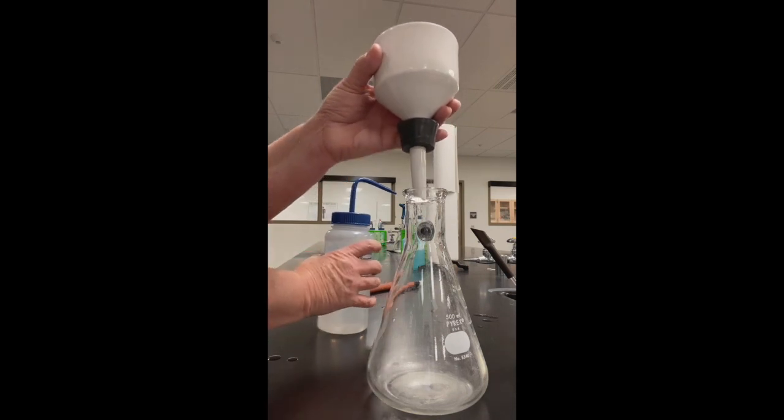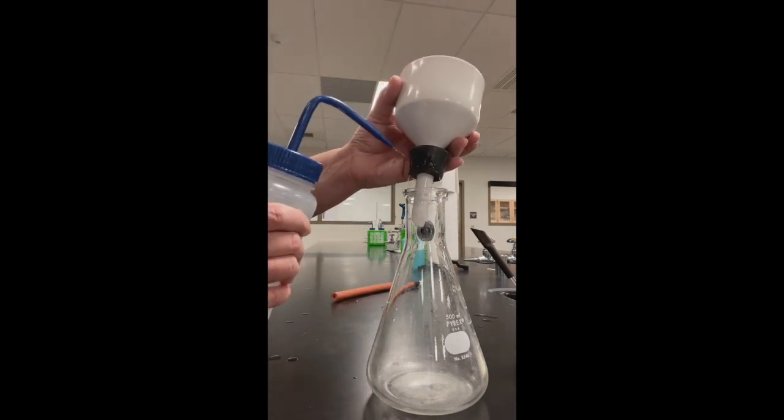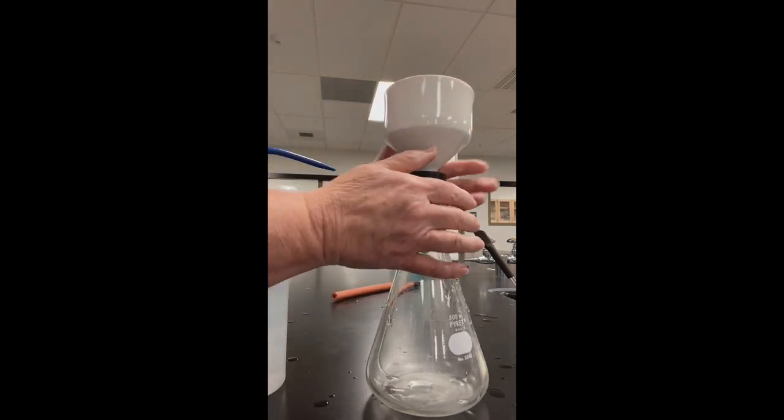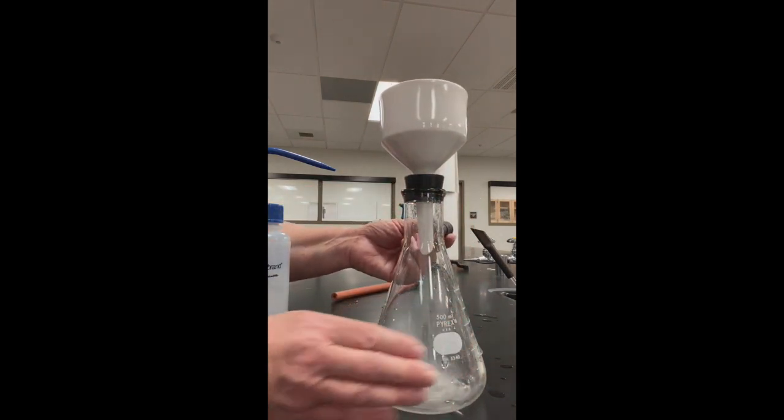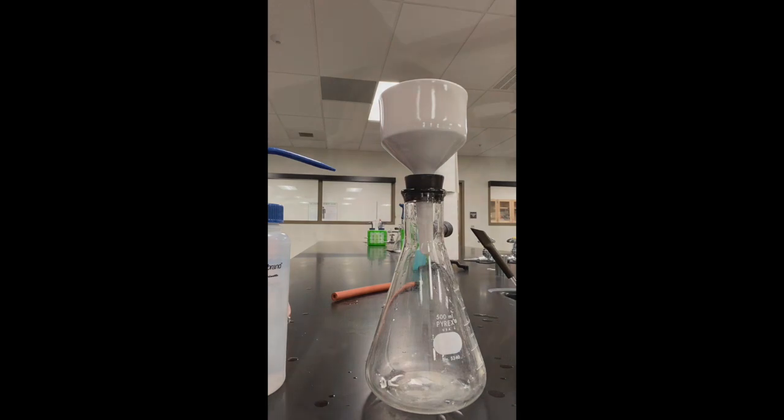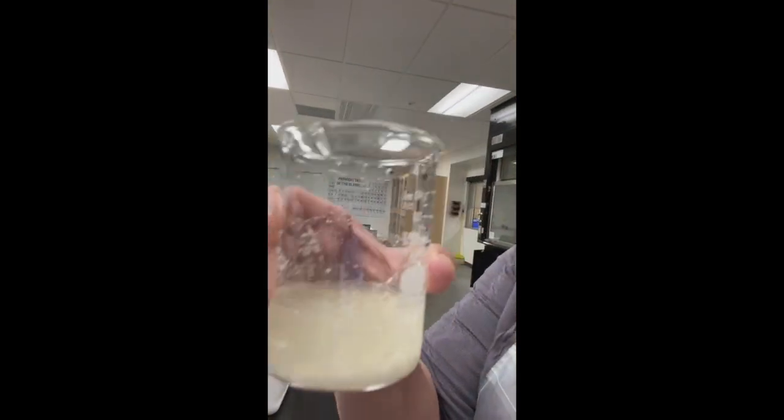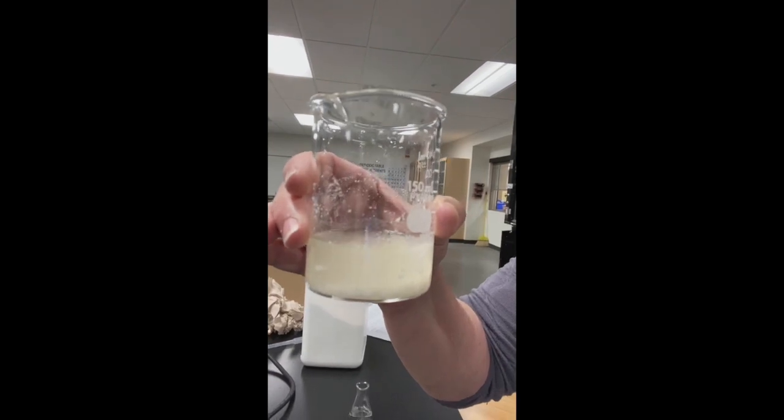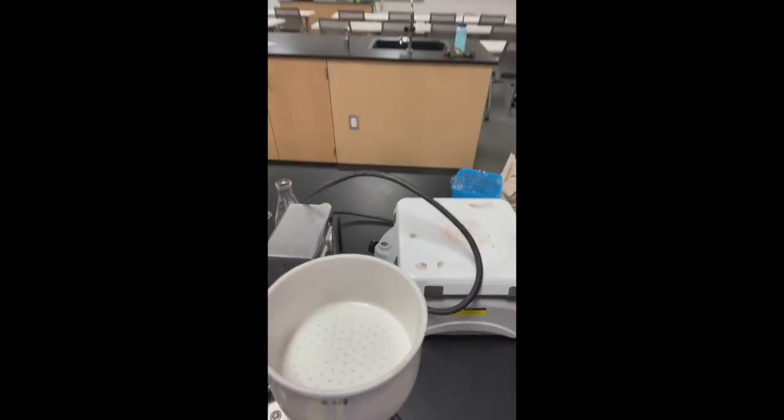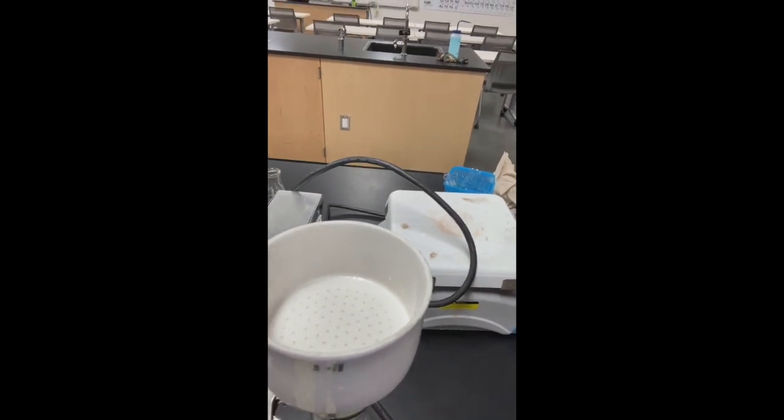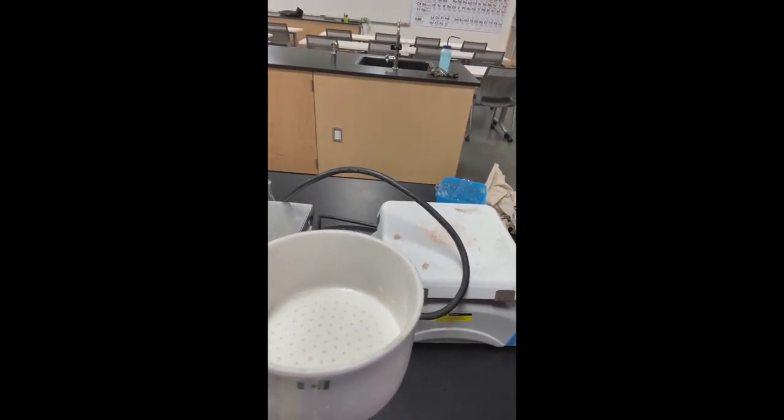When I'm putting a Buechner funnel into the filter flask, I need to get the rubber stopper wet a little bit. Push down on the rubber stopper and then attach it to have the vacuum go. So the vacuums aren't on so I'm going to have to use the aspirator. It's going to be kind of loud. I'm going to be taking these solids. I'm actually going to pour the liquid in first, as much as I can, into my filter flask here, into my Buechner funnel and collect the crude crystals.